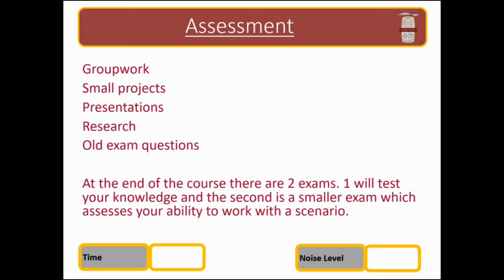Your assessment. The assessment of GCSE Business is summative, so you will do two exams at the end of your final year. The first will test your knowledge and the second is a smaller exam where they give you a case study and you answer some questions on it and carry out some advice for the business. Both exams have a mixture of multiple choice, low-mark, and high-tariff questions — six, ten, or even twelve marks — where you need to be able to write extensively. The use of technical terms is absolutely crucial, and understanding what the question is asking is very important.